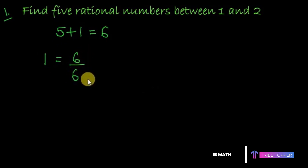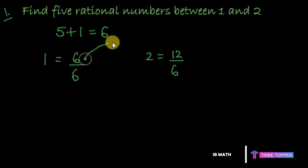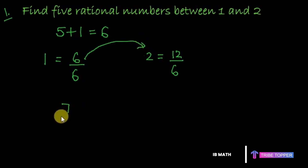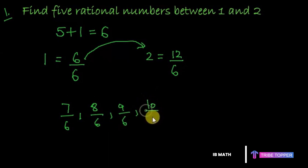I can write two as twelve upon six. So as you can see, going from six by six to twelve by six, you'll automatically get five rational numbers: seven upon six, eight upon six, nine upon six, ten upon six, and eleven upon six.